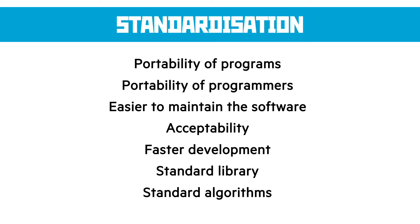Acceptability is important — is the software acceptable for us to use? If we've got a standard software or hardware model, there's more chance of it being accepted as a working part of the product. Development will also become faster because the more we know about it, the quicker we can develop things and the easier it is to build things. If we build upon existing standards and expand them a little bit, we've got a starting point. We can also deliver a standard library and standard algorithms — for example, if we use standard algorithms like quicksort, we know the big O complexity and the expected return times, which just makes it easier to program.